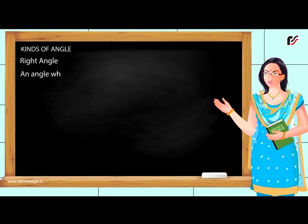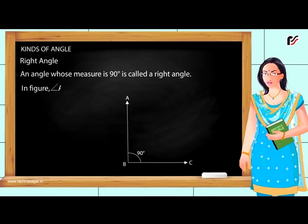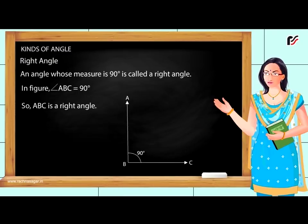Right Angle: An angle whose measure is 90 degrees is called a right angle. In the figure, angle ABC is equal to 90 degrees. So, ABC is a right angle.